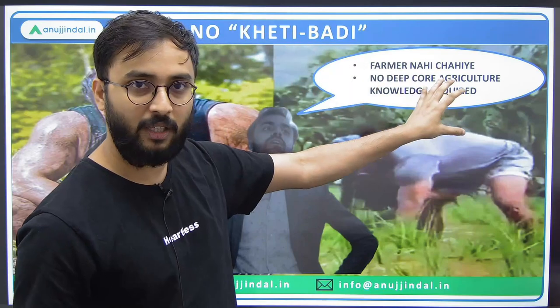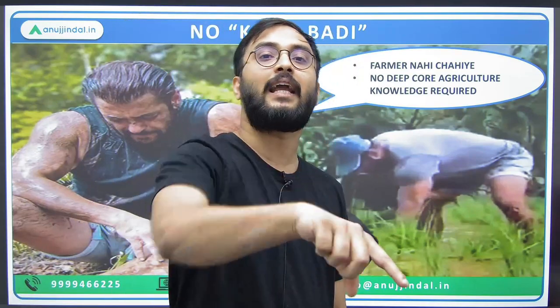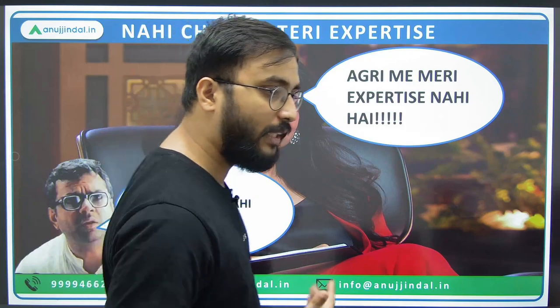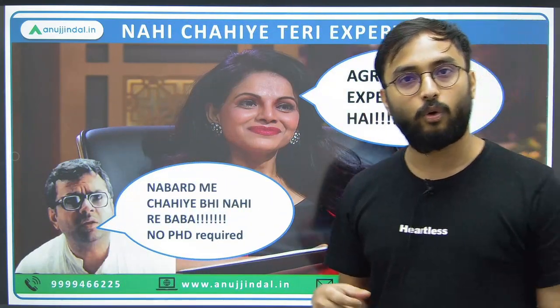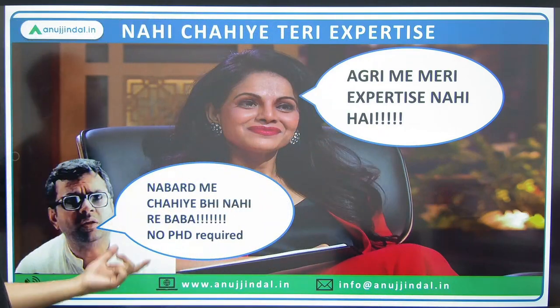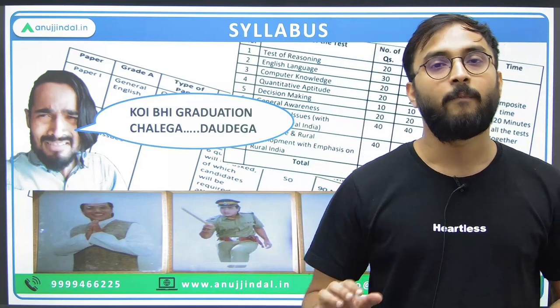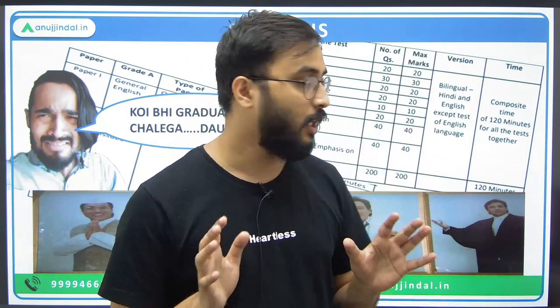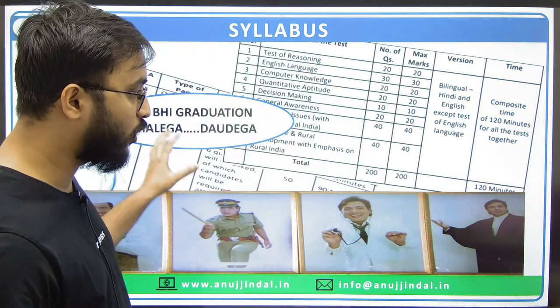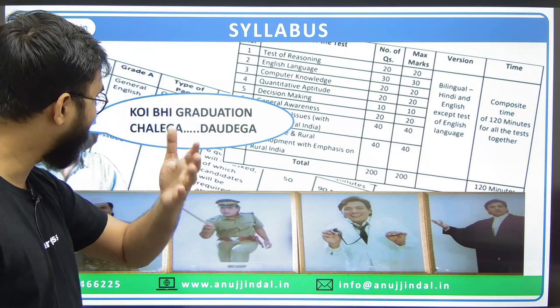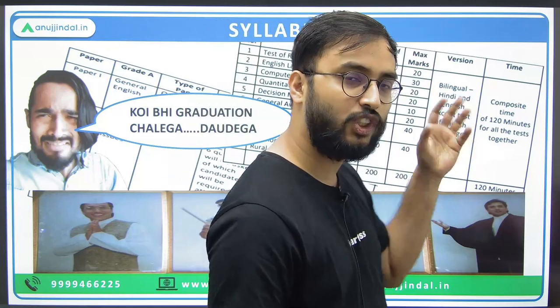NABARD doesn't want a farmer — NABARD wants assistant managers who are officers that can improve policy making and implementation in the agricultural sector. So deep core understanding of agriculture is not the case; you should have basic understanding. Even if you don't have expertise, you can definitely apply here, because NABARD doesn't need a PhD. Look at the syllabus and notification when you apply: NABARD Grade A 2023 is open for all graduates — art, commerce, science, agri background, or engineer. It doesn't really matter — any graduation works.